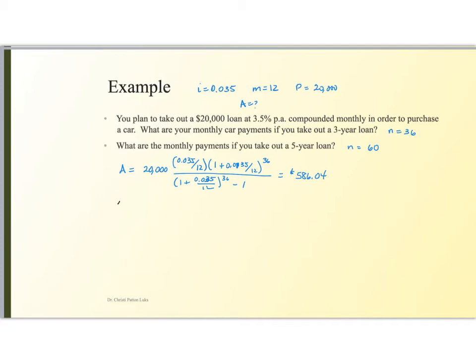If I repeat this for 60 months, 60 payments, then what changes is simply the number of payments. So I'm doing 60 payments instead of 36. And of course the amount is less. It turns out that this time the amount is $363.84.